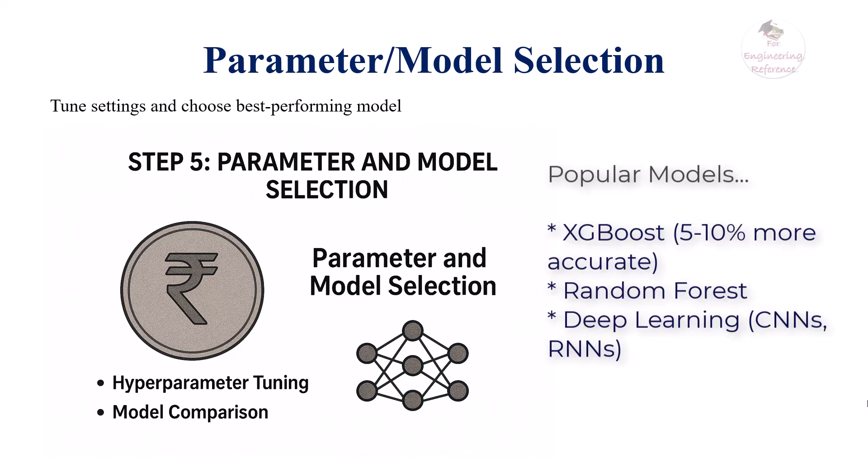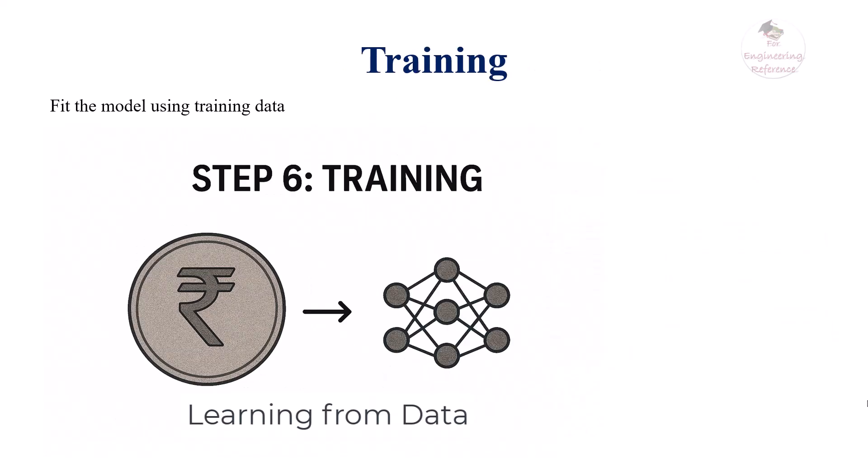Then, we may compare multiple models to choose the one that performs best. Now it's time for training! Here, the model learns from the data by finding patterns and relationships. Using computational resources, it adjusts internal parameters to minimize prediction error on the training set.